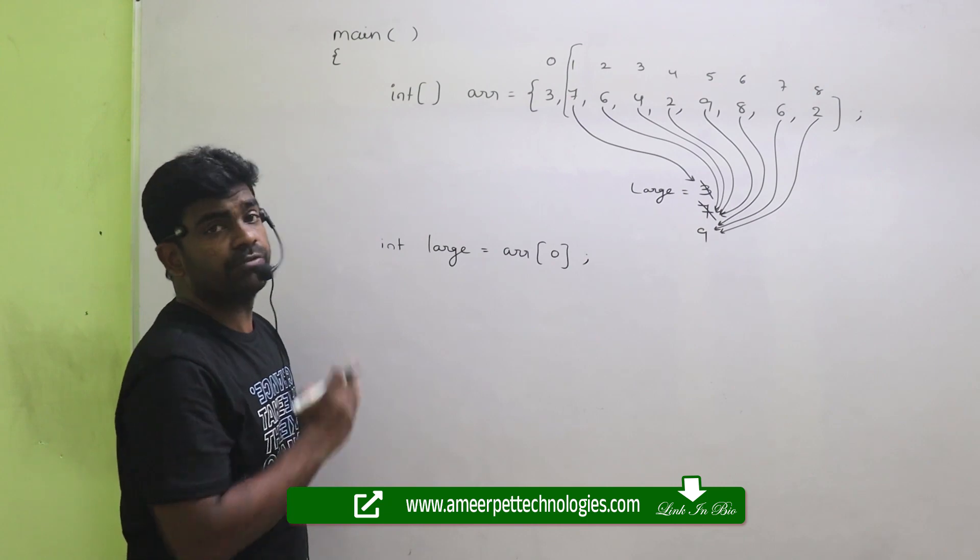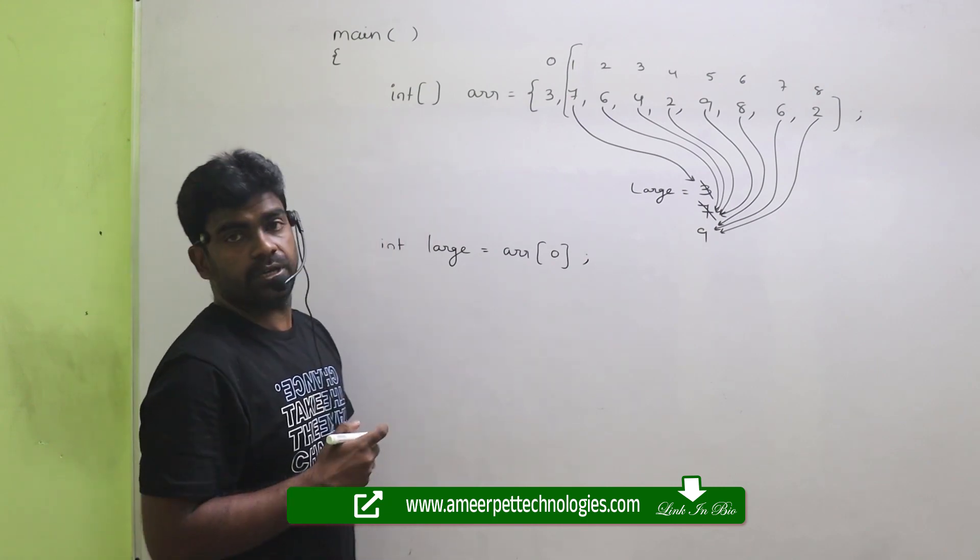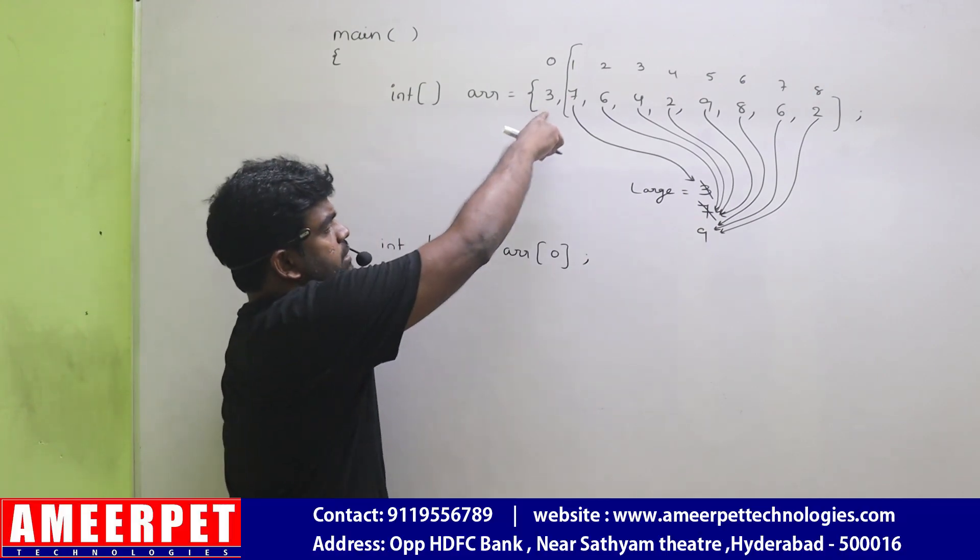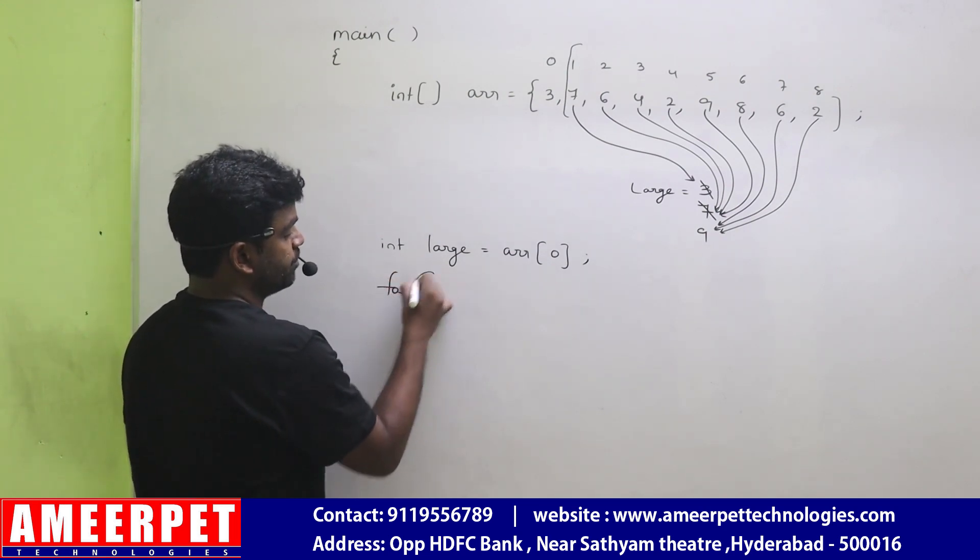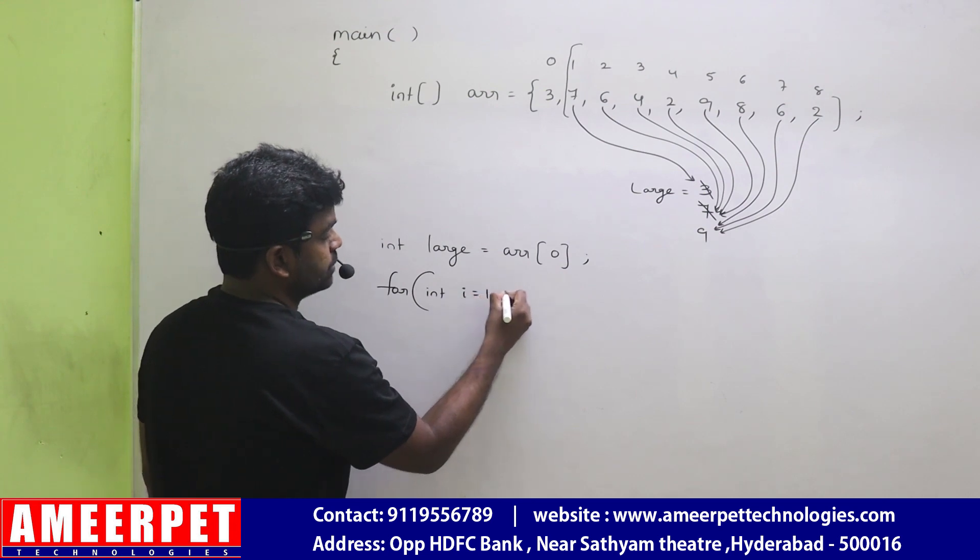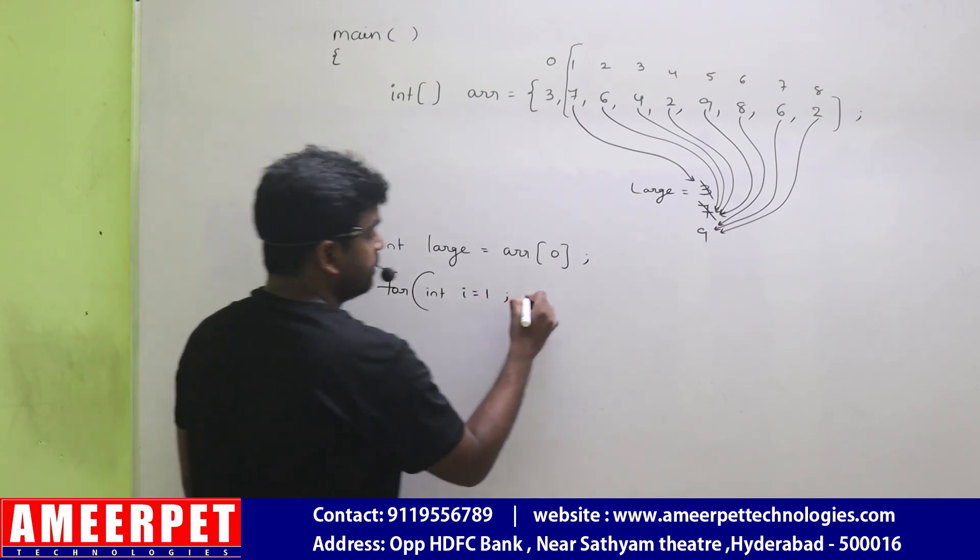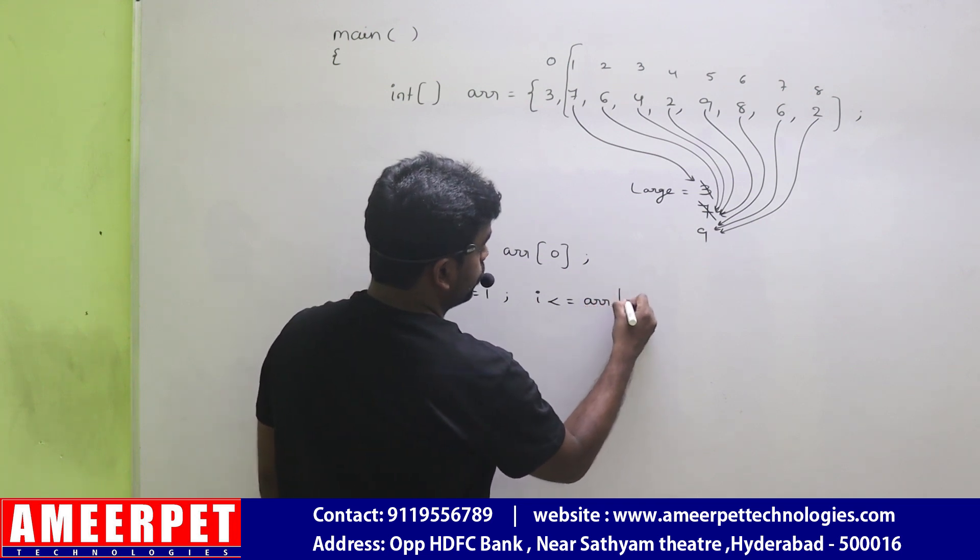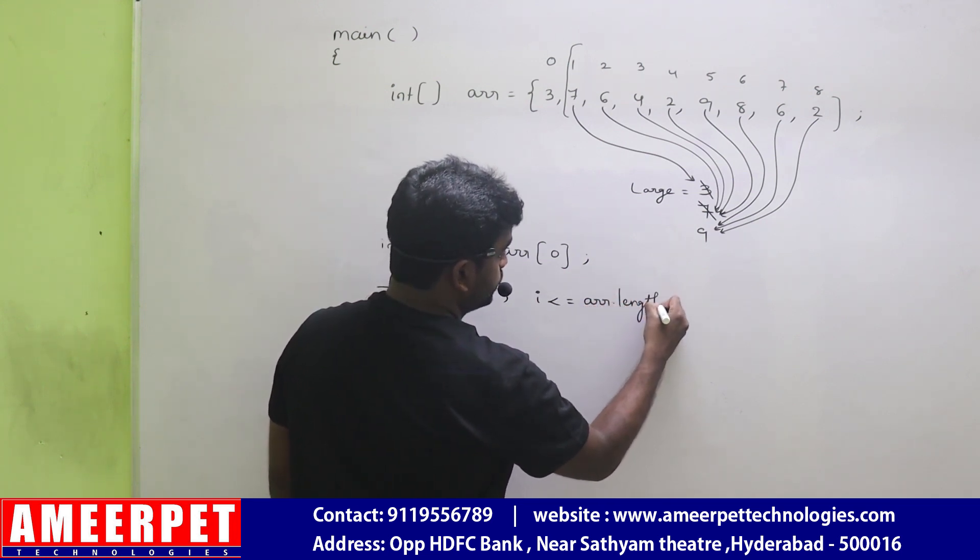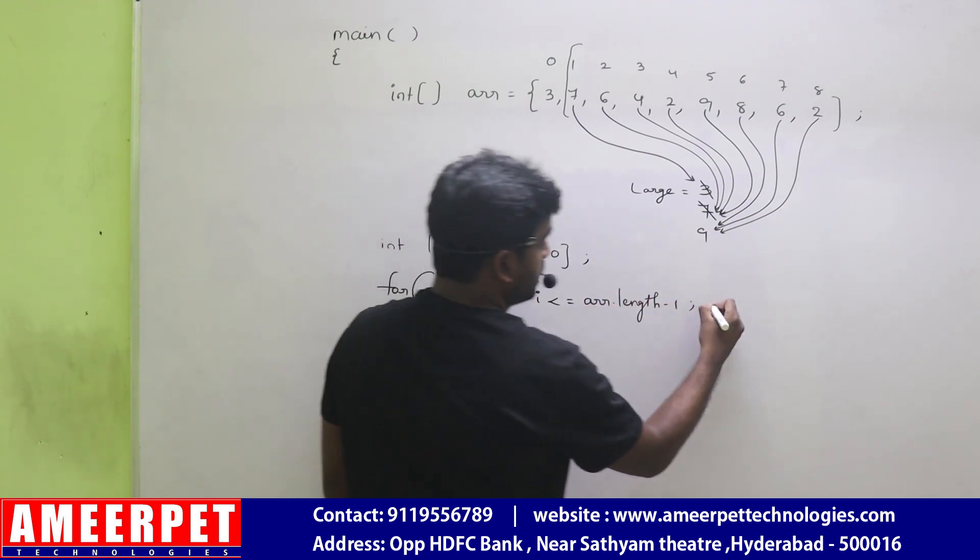Now just repeat the loop from first location to last location. Not 0th location because you already considered it. So repeat the loop with the index I, starting with 1. I value is less than or equal to the total length minus 1.